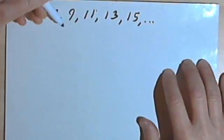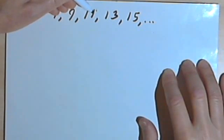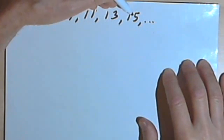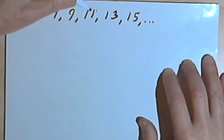Here I've got a sequence 7, 9, 11, 13, 15. And to get from one term to the next, I keep adding a 2.